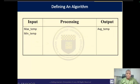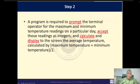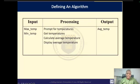Our definition table will have maximum temperature and minimum temperature as inputs, and average temperature as output. Now let us identify the processing steps by looking at the verbs. We have been asked to: prompt, accept, calculate, and display. Our updated solution table has maximum and minimum temperatures as inputs, average temperature as output, and the processing steps are: prompt for temperatures, get maximum temperature, get minimum temperature, calculate average temperature, and display average temperature. The processing column of our table becomes our algorithm.